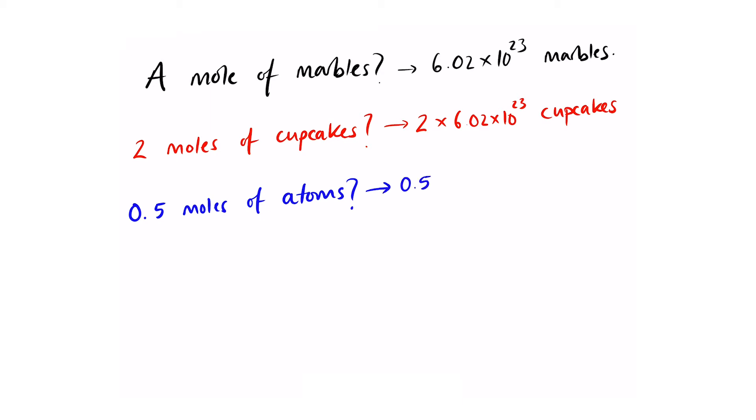If I have a mole of marbles, that means I have 6.02 times 10 to the power of 23 marbles. What about 2 moles of cupcakes? That means I have 2 lots of Avogadro's constant worth of cupcakes. What about if I have 0.5 moles of atoms? That means I have 0.5 times 6.02 times 10 to the power of 23 atoms. Okay, if that makes sense, let's try a question.